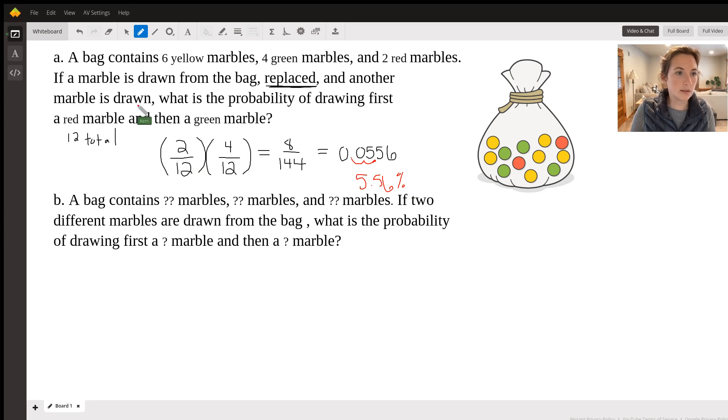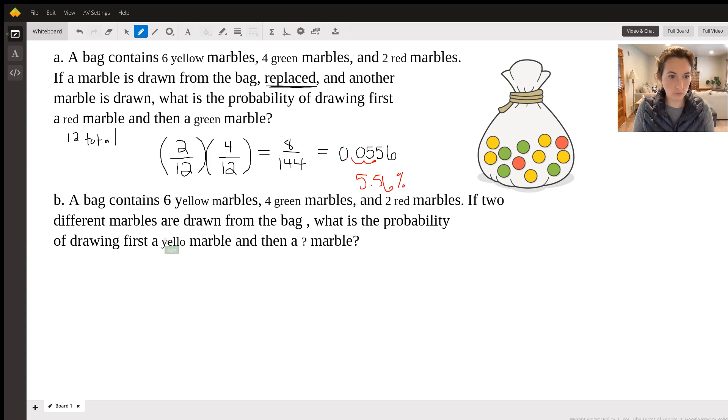Okay, all right. The next question is a little bit different though. So for this one, it says, again, we're just going to keep it the same. Let's say six yellow and four green and two red. If two different marbles are drawn from the bag, and it's important here to know it does not say we were replacing it. What is the probability of first drawing, let's say, yellow and then red?